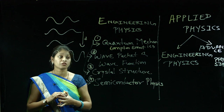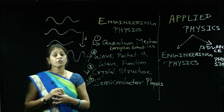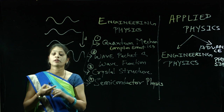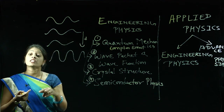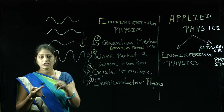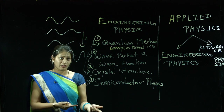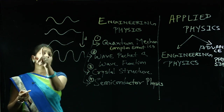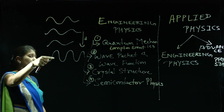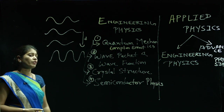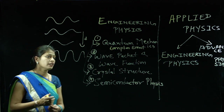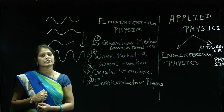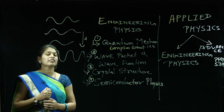In wave packet and wave function, first we will deal with what is a wave packet — its definition. Then we go for their velocity. Their velocity is called phase velocity and group velocity. Phase velocity is concerned with the velocity of a single wave, and group velocity is concerned with the velocity of the whole group.